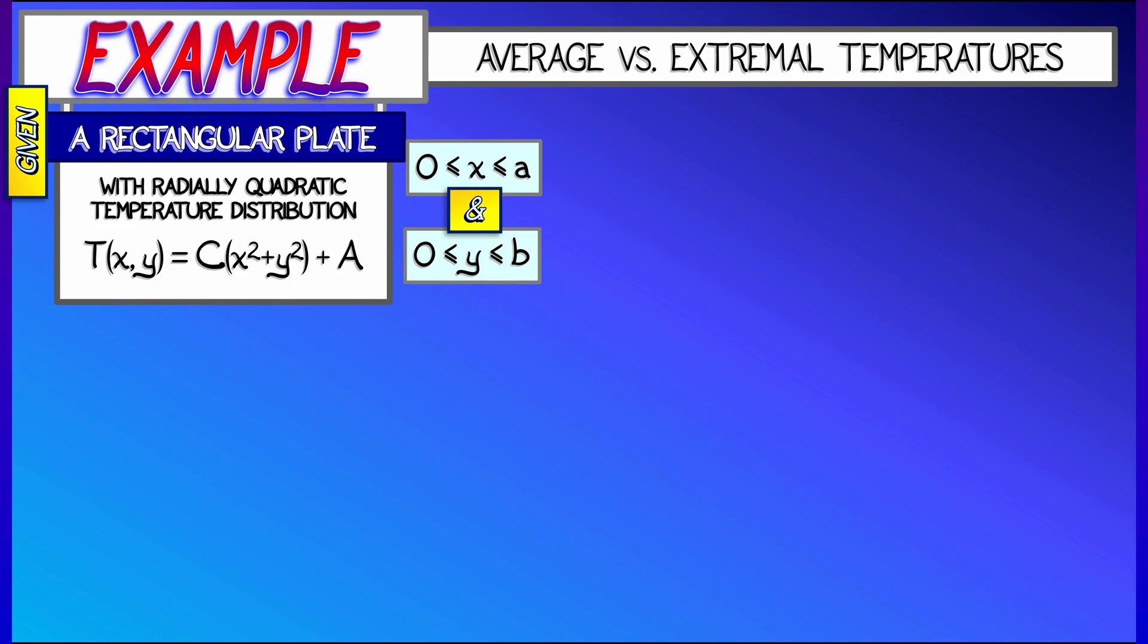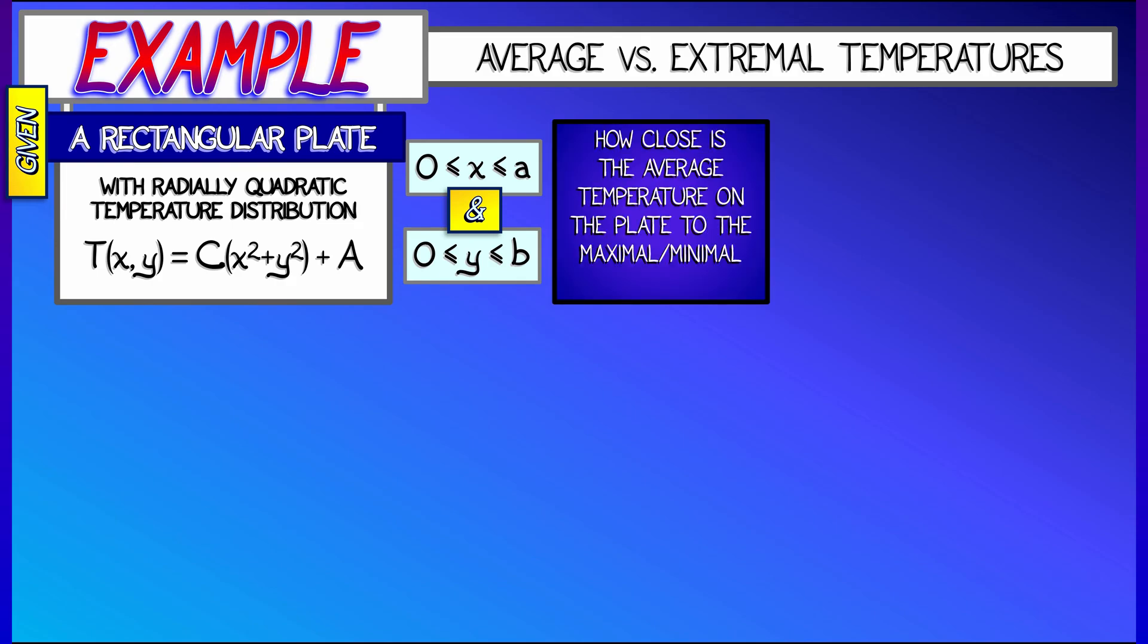Now x ranges from 0 to A, y ranges from 0 to B. And what this temperature function looks like is you've got some constant A for ambient temperature, and then the temperature's increasing radially as you move from the origin out.